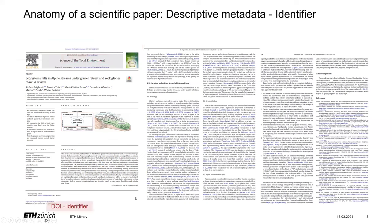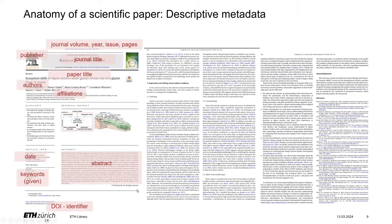Last but not least there is the DOI, an identifier which identifies this exact paper in a very clear way. That is the metadata that describes and helps identifying this paper, and all database searches make use of these fields.